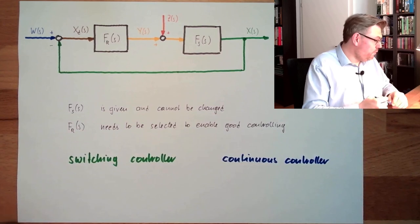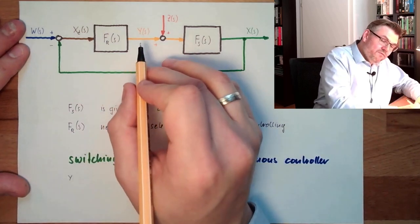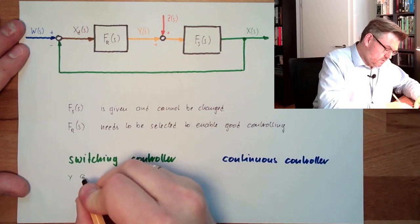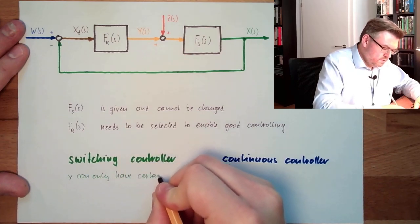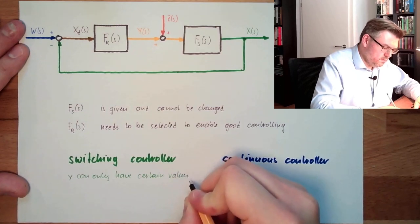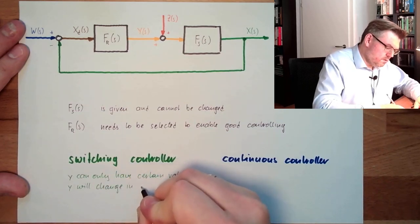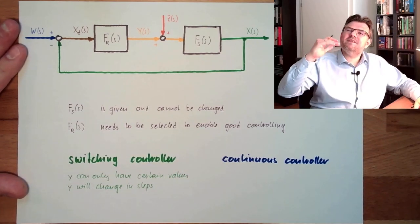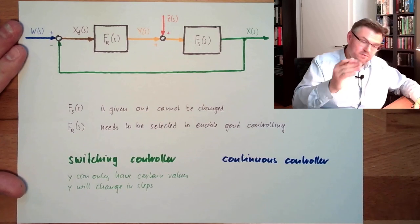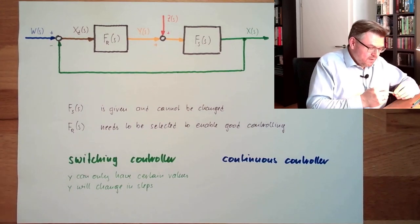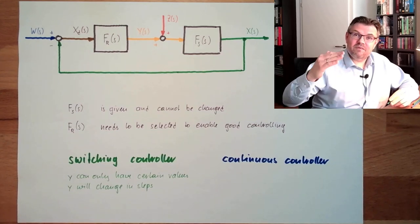Let me repeat the difference — there is a separate video about this. For switching controllers, the correcting variable y can only have certain values; it will change in steps. There are only distinct values which y can have — maybe two or three. One would be pointless of course, there needs to be at least two. The output of the controller is switched from one value to another, with nothing in between.